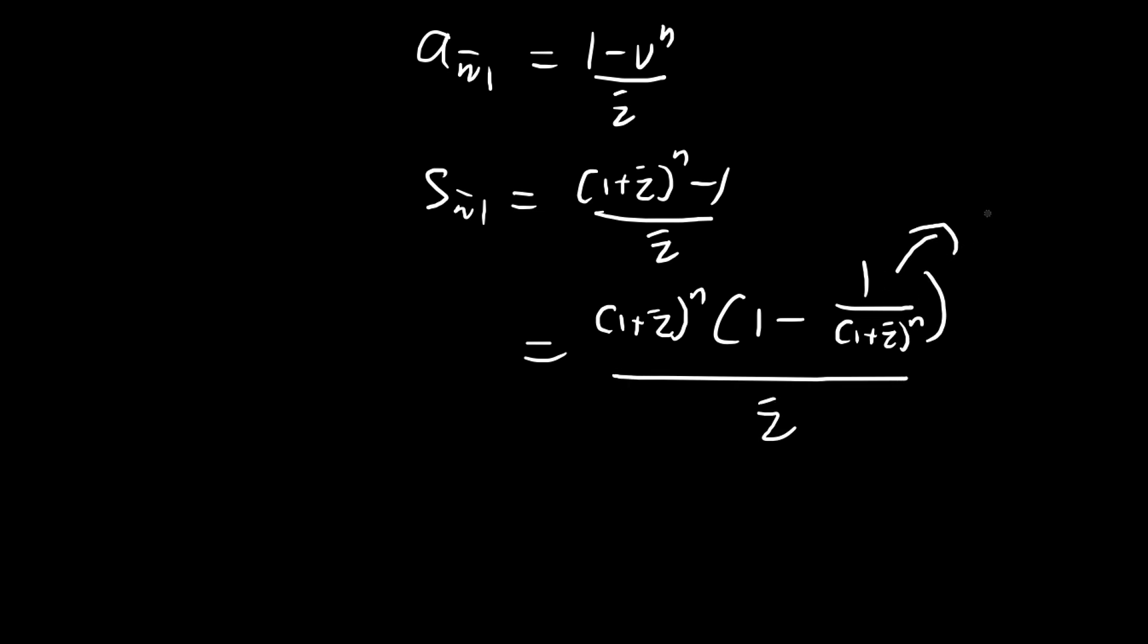So let me just consider something else. We found these two formulas. So is there a way I can relate the two? Notice that for Sn, I can factorize this term out. Now this term here, this is just v to the power of n. So if we write it as v to the n, we get back this. Well, this term here, this is just a n. So there we have it. Sn is actually equal to 1 plus i to the power of n multiplied by a n. So we found a formula that relates to these two expressions.